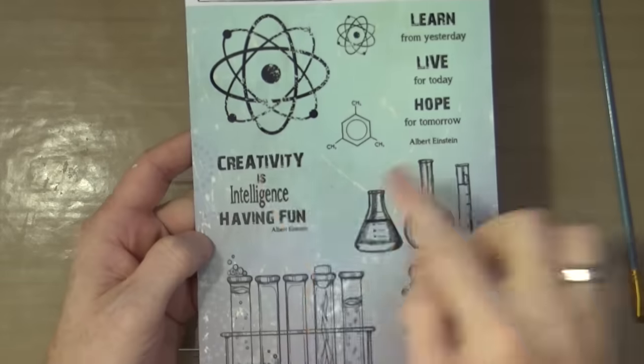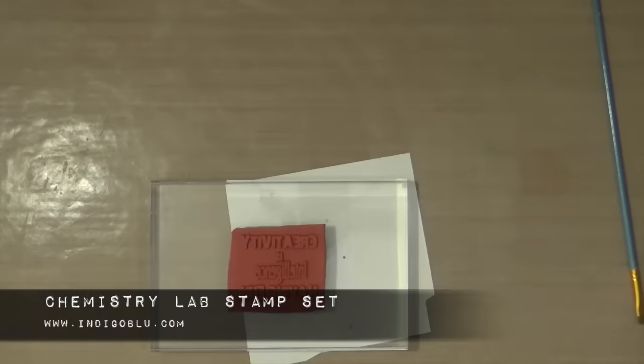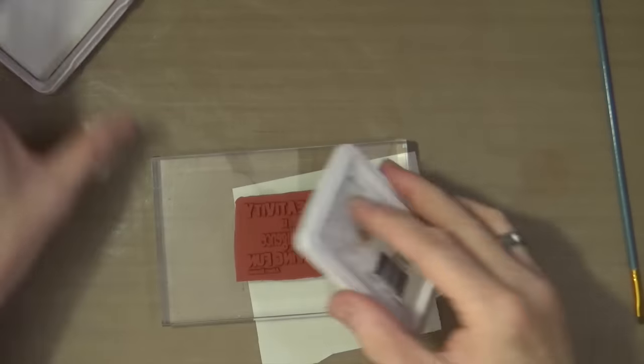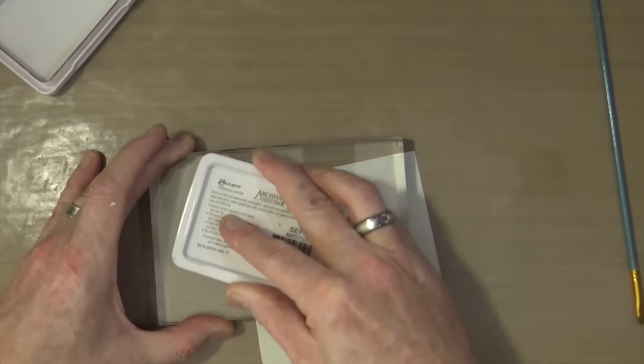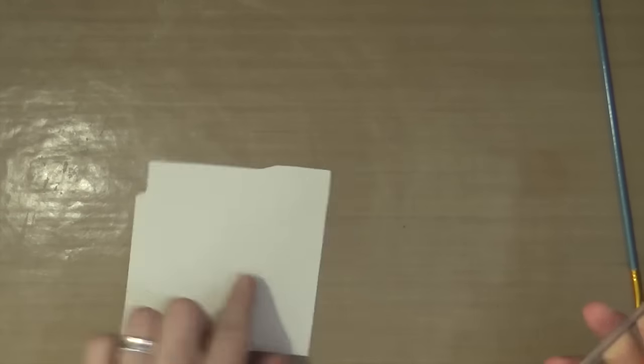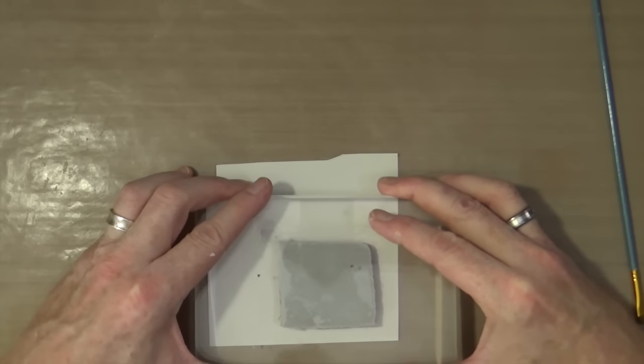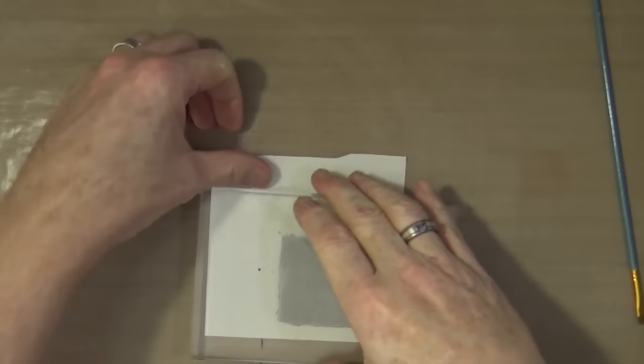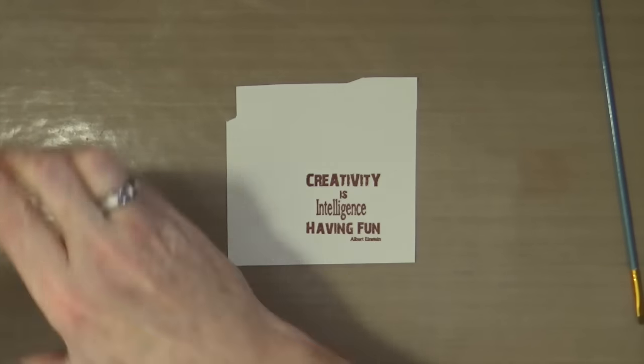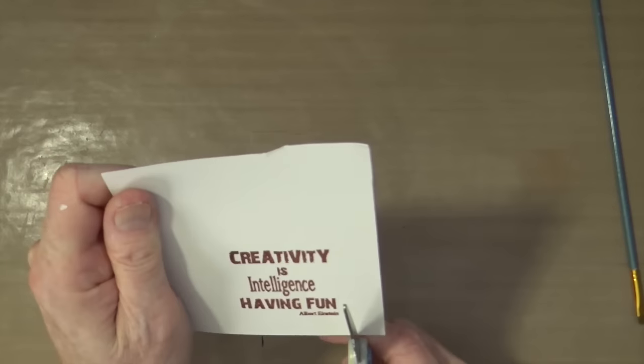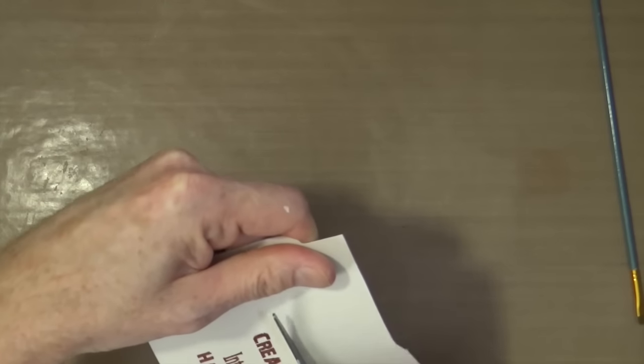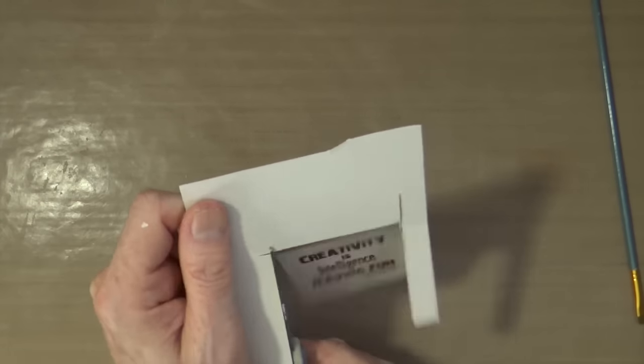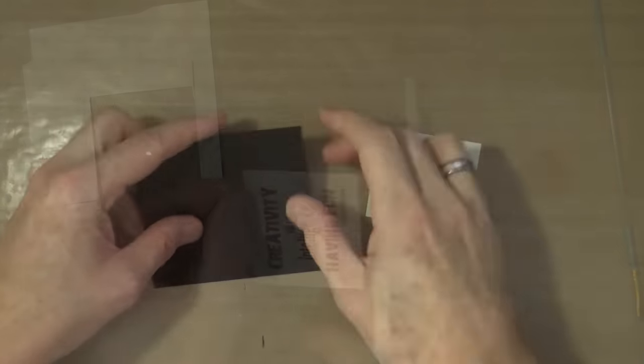Once again using the chemistry lab stamp set, I'm going to use this quote from the set which says creativity is intelligence having fun. Again I'm going to use exactly the same ink as before, the sepia ink, to stamp out my quote onto the same card, which I'm then going to cut out just using a pair of scissors. I'm then going to take some black card from my stash and mount this panel onto the black card.